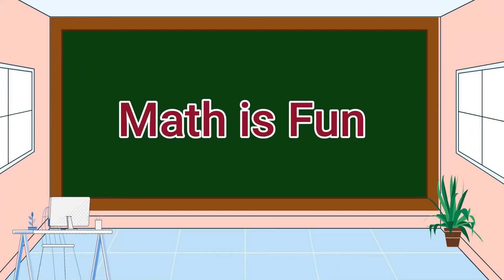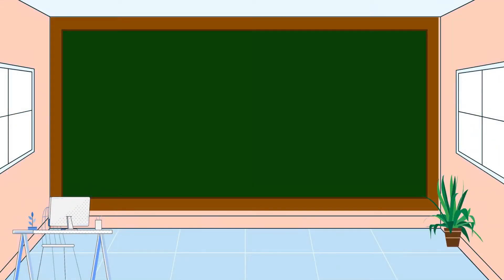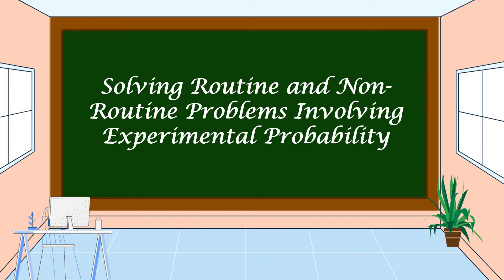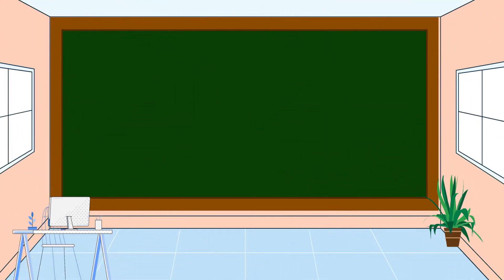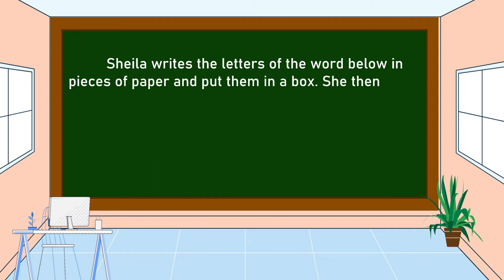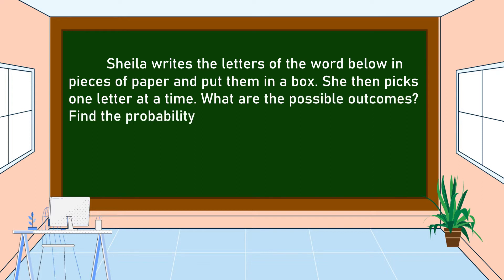Hello everyone, welcome to Math is Fun. Our lesson for today is all about solving routine and non-routine problems involving experimental probability. This is our problem: Sheila writes the letters of the word below in pieces of paper and puts them in a box. She then picks one letter at a time. What are the possible outcomes? Find the probability of drawing M, a vowel, and a consonant.